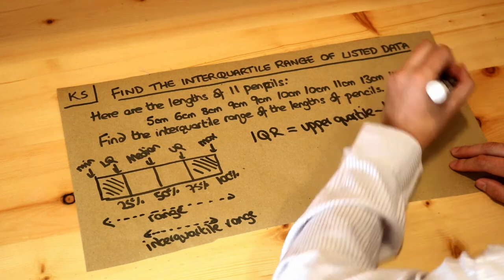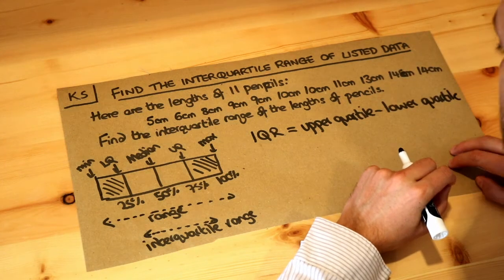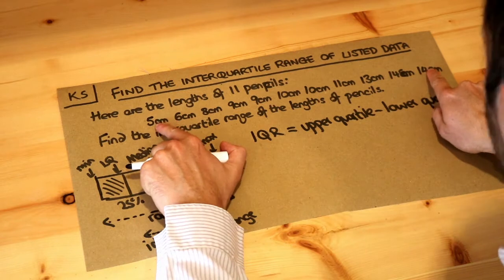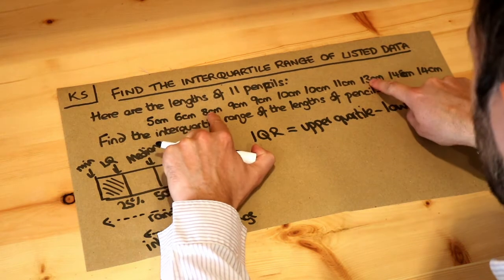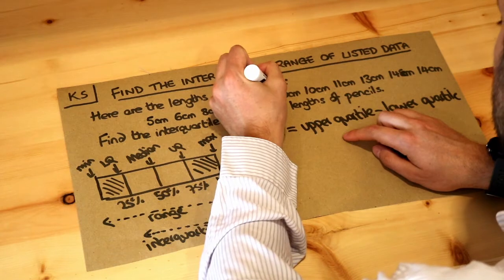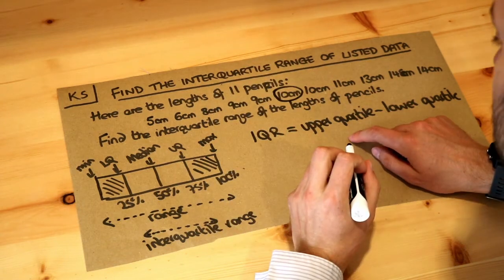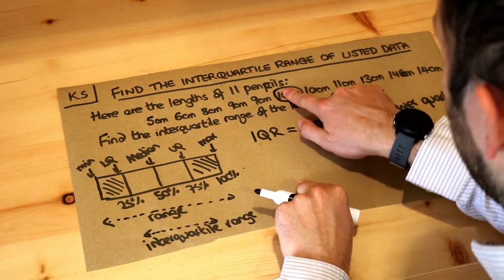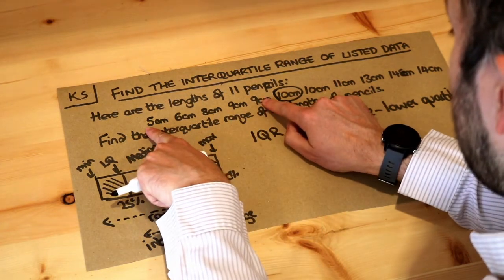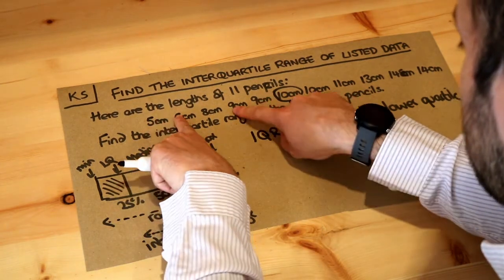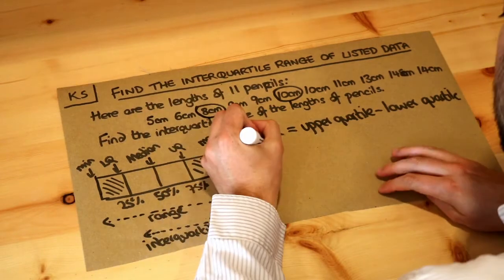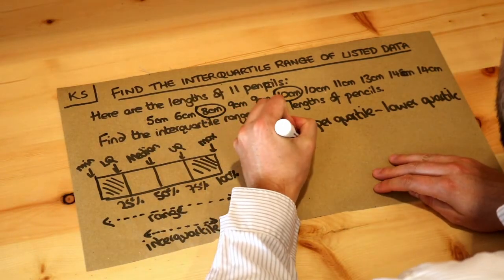We saw how to find quartiles in a previous video. First we count to the middle by counting inwards from both ends, giving the median. Then, ignoring that middle value, we find the median of the lower half by counting inwards. We can see that's our lower quartile, which is 8 centimetres.